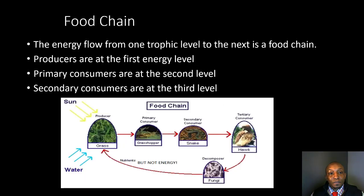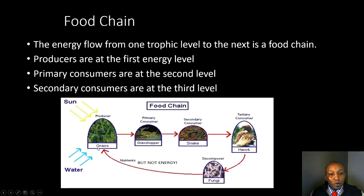Let's begin by talking about a food chain. In a food chain, the energy flows from one trophic level to the next. Producers are at the first energy level — they receive sunlight, water, and carbon dioxide to produce and make food for themselves.